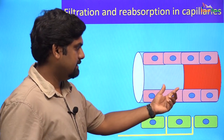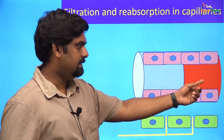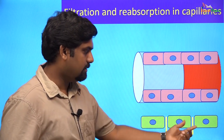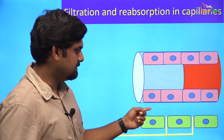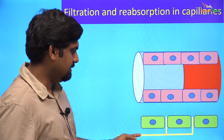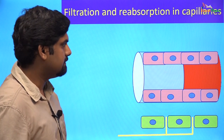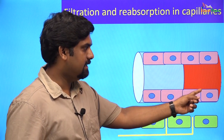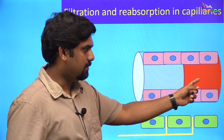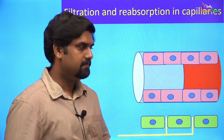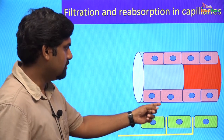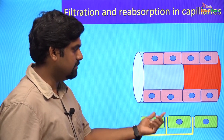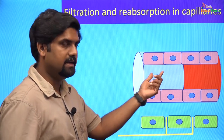This is a picture of a capillary. This is the arterial end. This is the venous end. These are the surrounding cells and this is the interstitium and these are the lymphatics. Normally, filtration happens at the arterial end so that nutrients can pass from the blood vessel to the cells. Reabsorption usually happens at the venous end so that the waste materials produced by the cells can be taken back.